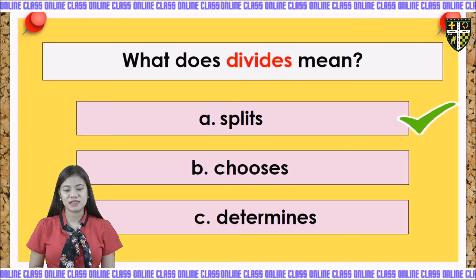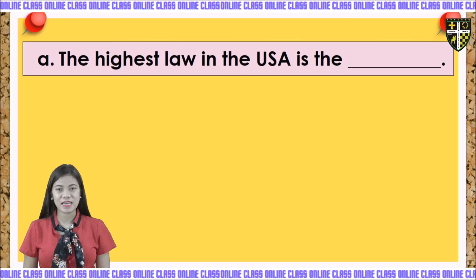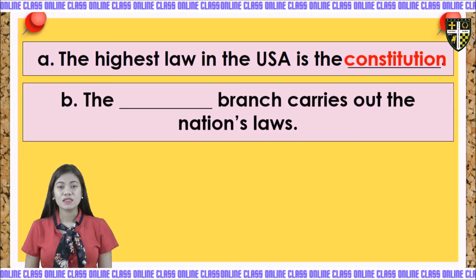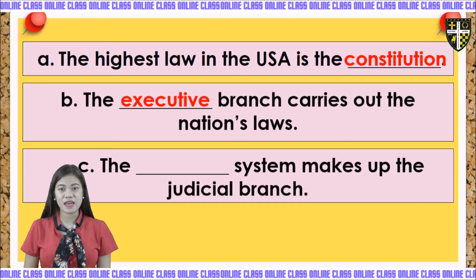Now let us answer question number five — complete the sentences. In letter A, the highest law in the USA is the blank. The answer is constitution. Under letter B, the blank branch carries out the nation's law. The answer is executive. And then letter C, the blank system makes up the judicial branch. The answer is court.